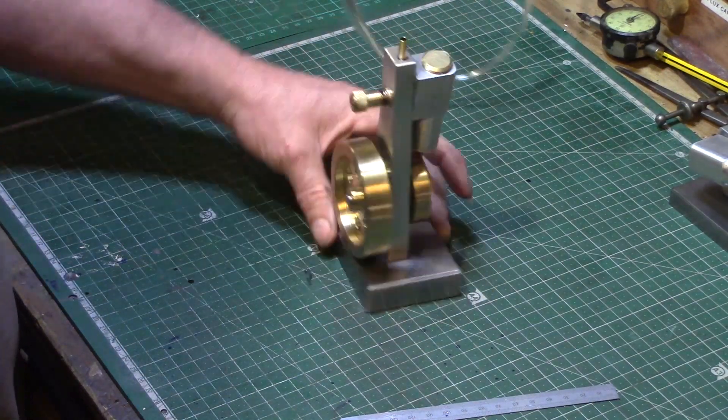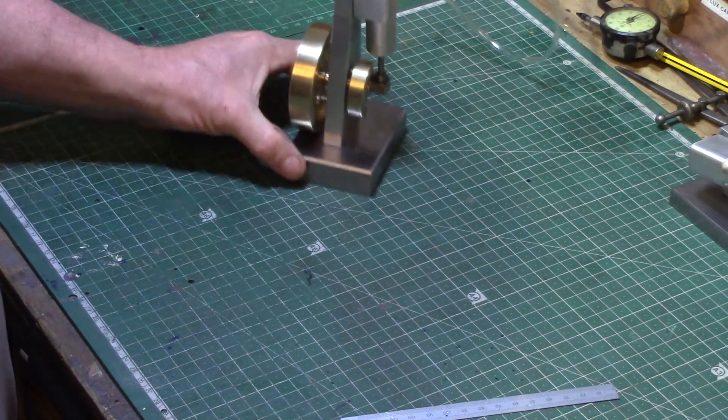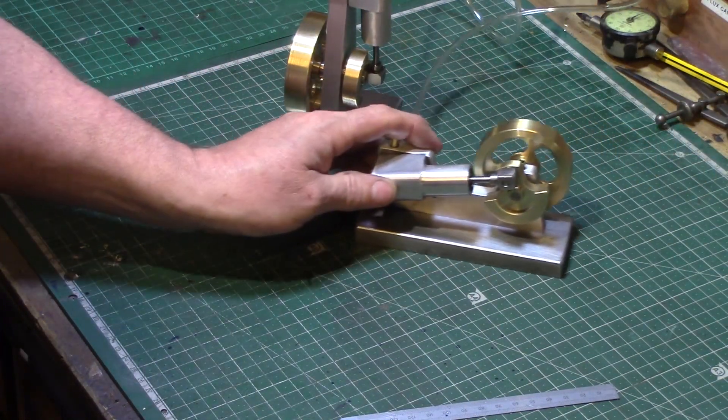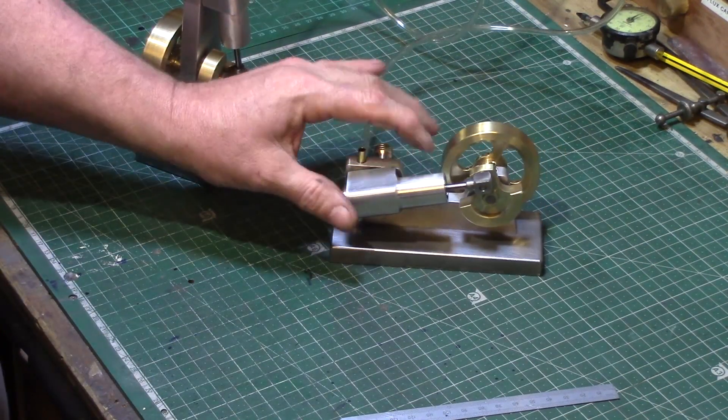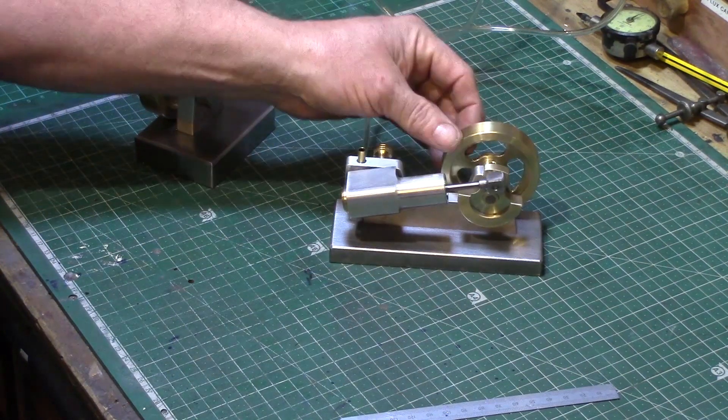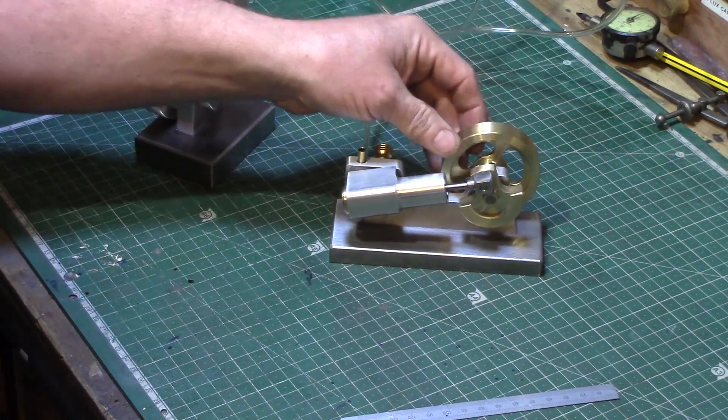But the biggest modification I've actually done is I've turned it on its side. So this is the wigwag mark 2, which is a horizontal running engine.